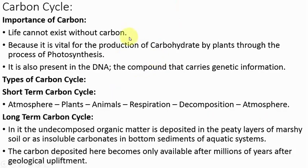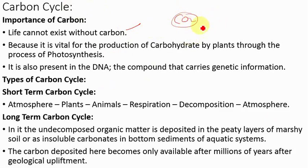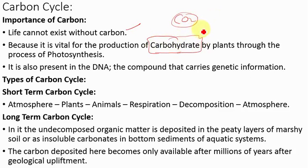This is all about the water cycle. Next, let's look at the carbon cycle. Before doing the carbon cycle, let's understand the importance of carbon. Simply, life cannot exist without carbon. Carbon in the atmosphere, in the form of carbon dioxide, has a very important role in photosynthesis. During photosynthesis, plants convert solar energy into chemical energy, and carbohydrates are produced — a form of energy that provides energy to plants.